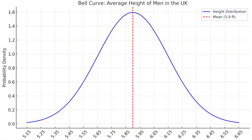To make it easy to understand, we're going to be looking at the height of males in the UK. The bottom of the graph from left to right is height in feet, starting with 5.15 feet on the left and going all the way to 6.65 feet on the right. The red dotted line down the center represents the mean height of men in the UK — 5.9 feet. The blue line is the probability density, which shows how the data is distributed across the range of heights. The higher the blue line, the more likely a man is to have that height.